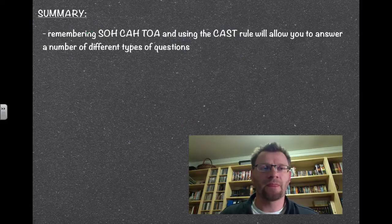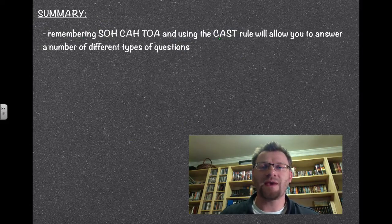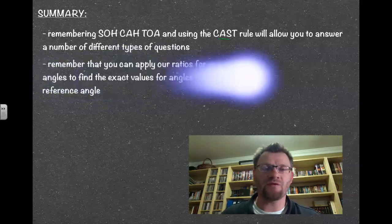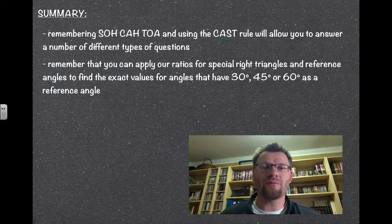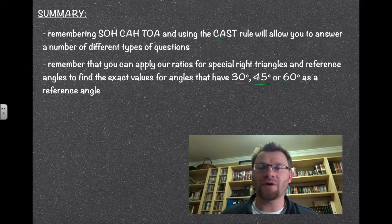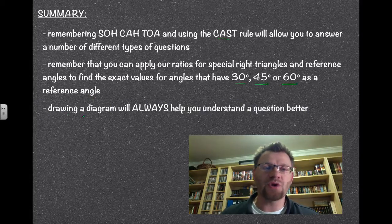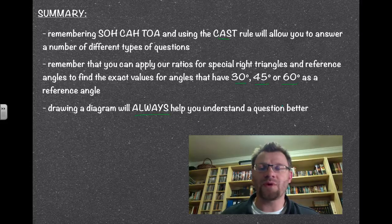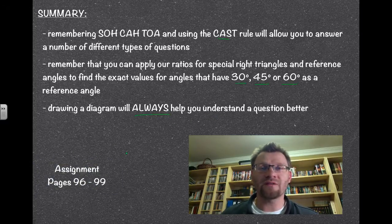In summary, remembering SOHCAHTOA and using the CAST rule will allow you to answer a number of different types of questions. You can always apply the ratios for special right triangles and reference angles to find the exact values for angles that have 30, 45, or 60 as a reference angle. Drawing a diagram is always going to help you understand the question a little bit better. Your assignment is on pages 96 to 99. Good luck, and we'll see you in class.